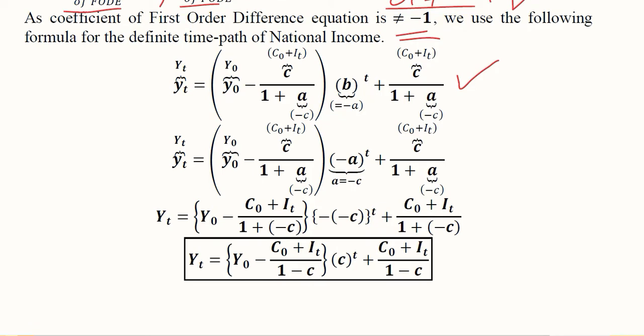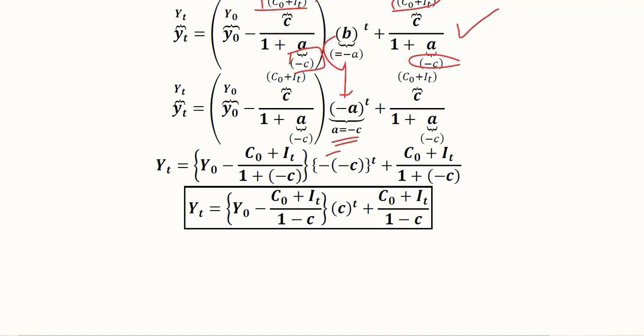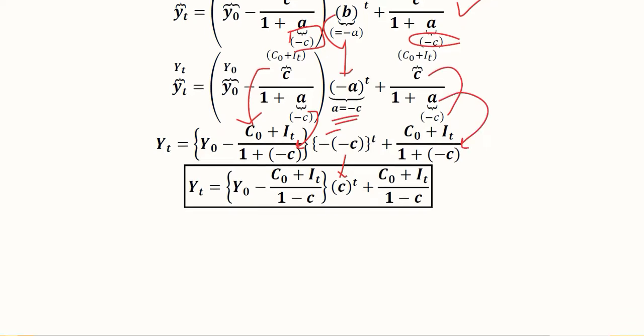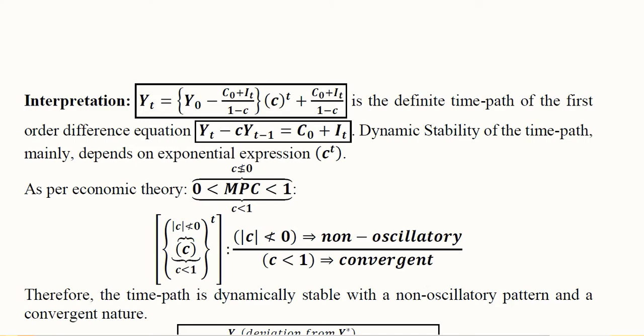Now we can substitute the values of c and a. In the next step, instead of writing b, we write -a, and a equals -c. So it becomes -(-c) = +c. We substitute these values and simplify to get the time path of income when it has lagged dependence.